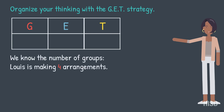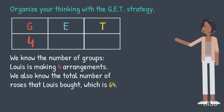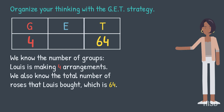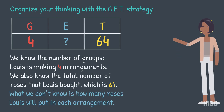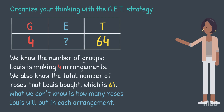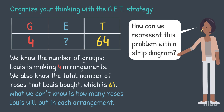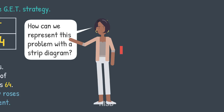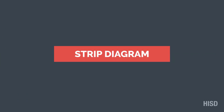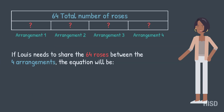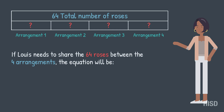We know the number of groups — Louis is making four arrangements. We also know the total number of roses that Louis bought, which is 64. What we don't know is how many roses Louis will put in each arrangement. How can we represent this problem with a strip diagram? If Louis needs to share the 64 roses between the four arrangements, the equation will be 64 divided by 4.